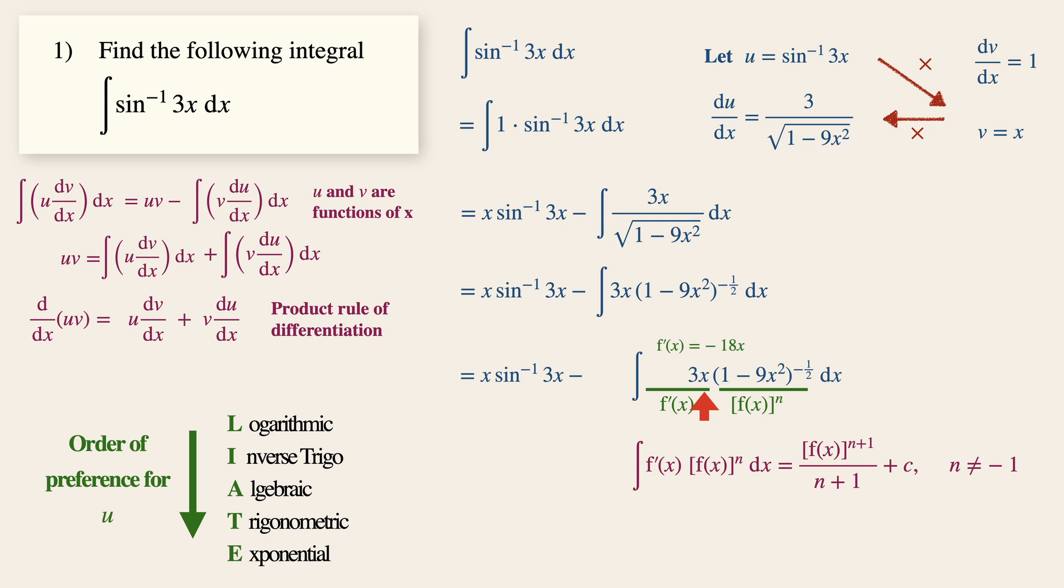We want to make this term minus 18x. To do that, multiply minus 6 within the integral. And to make things equivalent, we are going to multiply minus 1 over 6 on the outside of the integral.